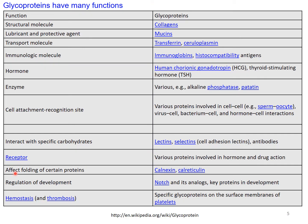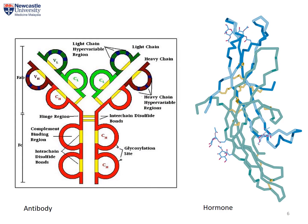Glycoproteins have many functions, and here is a list taken from Wikipedia. I will highlight one or two important examples. First of all, antibodies are glycoproteins. An antibody is composed of four polypeptide chains — two heavy chains in red and two light chains in green — and on the heavy chain there are two glycosylation sites which are added with sugars. The function of sugars on antibodies is to help stabilize the structure and prevent it from being degraded by proteases. Similarly, in hormones, surface sugars help protect the hormone molecule from easy degradation.